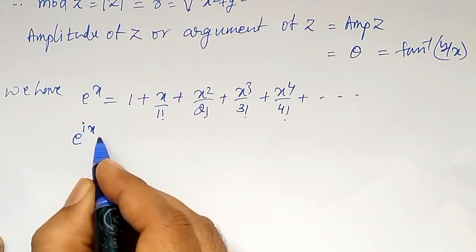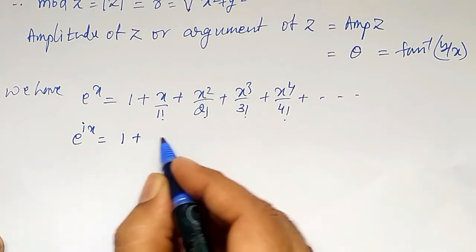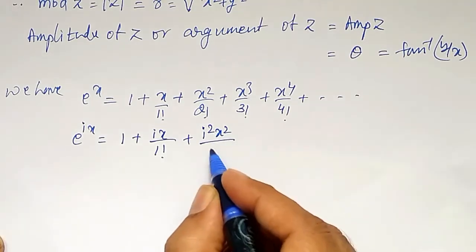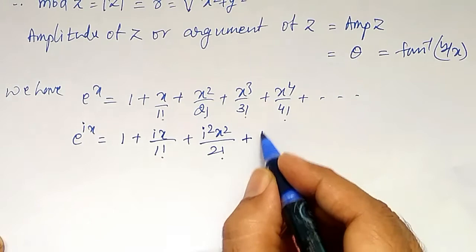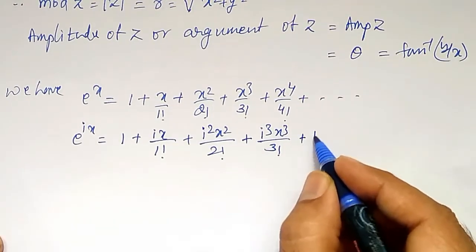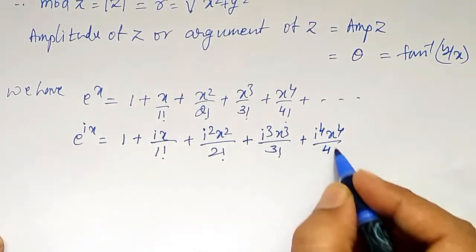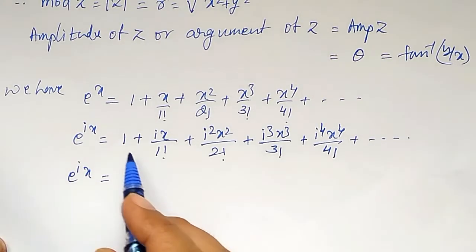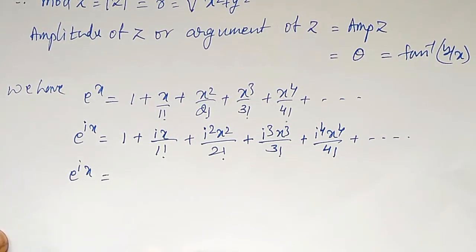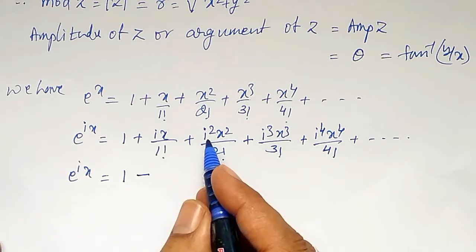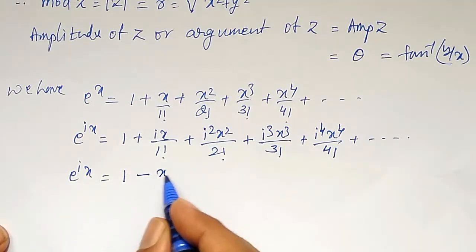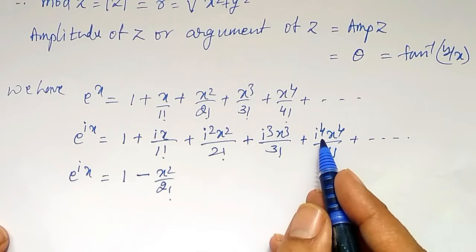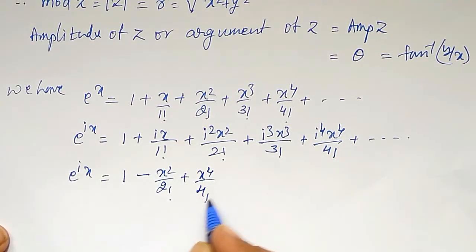Now, e to the power ix — if I substitute ix — then I get 1 plus ix divided by 1 factorial, plus i squared x squared divided by 2 factorial, plus i cubed x cubed divided by 3 factorial, plus i raised to 4 x raised to 4 divided by 4 factorial, plus so on. Separating real and imaginary parts: i squared is minus 1, so we get minus x squared by 2 factorial; i raised to 4 is plus 1, so we get x raised to 4 by 4 factorial, plus so on.